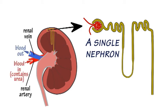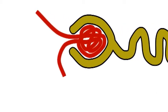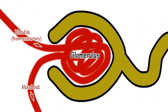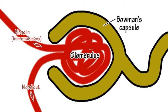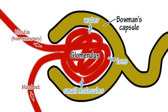Blood containing the toxic waste product urea from the metabolism of protein is pumped under pressure through the renal arteries into tiny balls of capillaries called glomeruli. Each glomerulus is surrounded by a Bowman's capsule, which acts as a filter. The pressure the blood is under causes water, ions and small molecules to leak out of the glomerulus into the Bowman's capsule.